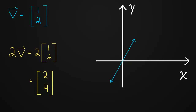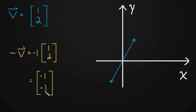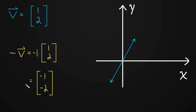We can also multiply V by one-half — it makes it half as long. What I really want to talk about is what happens when we take V and multiply it by negative 1: it flips the direction of V, now pointing in the opposite direction. Negative 1 times (1, 2) simply gives (−1, −2) — it flips the direction of V. And now we can talk about vector subtraction.